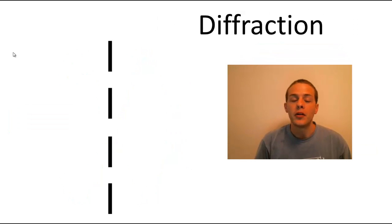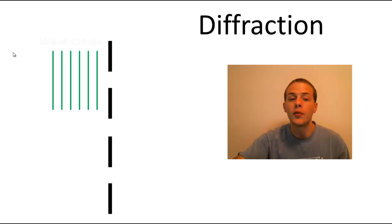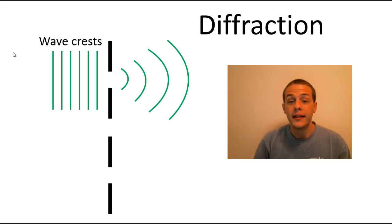Diffraction is a phenomenon that occurs when a wave is passed through a slit that is comparable in size to the wavelength of the wave. So suppose we pass some waves through a slit—these lines represent the wave crests. What's going to happen is as the waves pass through that slit, they're actually going to bend around that slit. This is what we call diffraction.